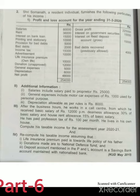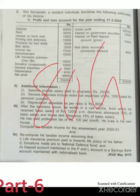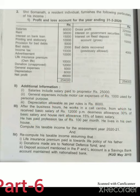Life insurance premium — own life only — is eligible to claim under section 80C. Donations are unapproved, so they are not eligible to claim under section 80C. Only approved donations can be claimed under section 80C.